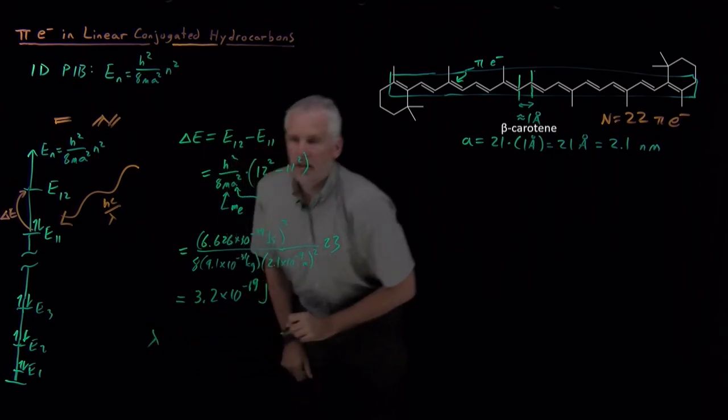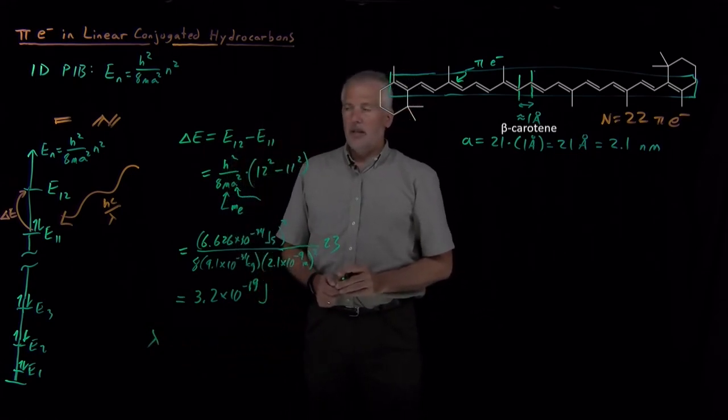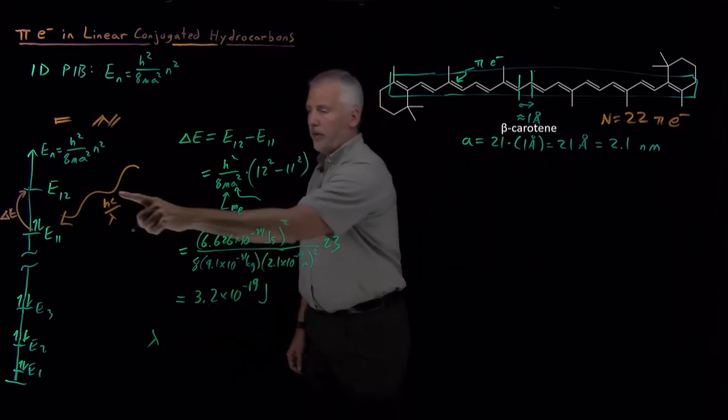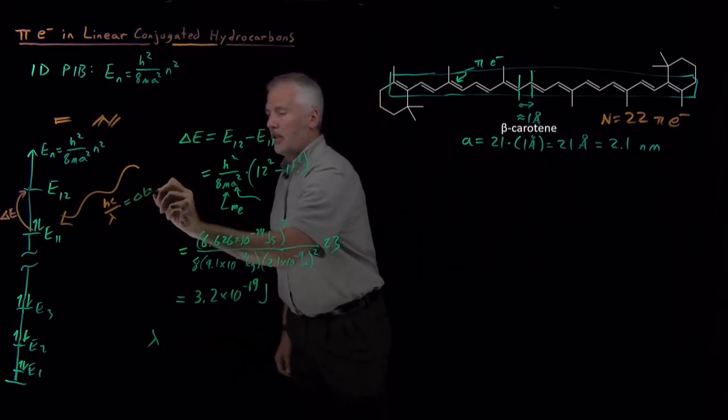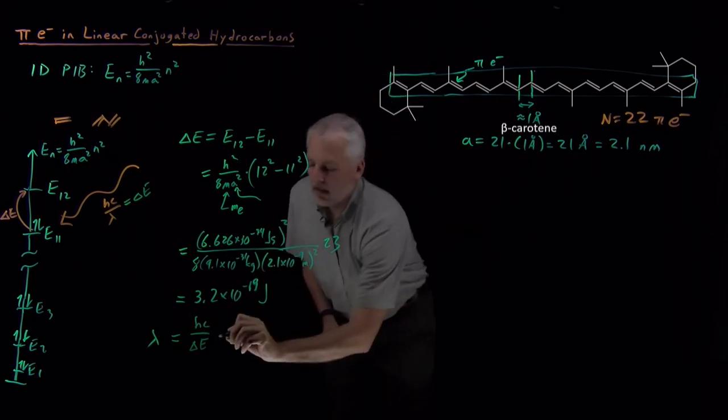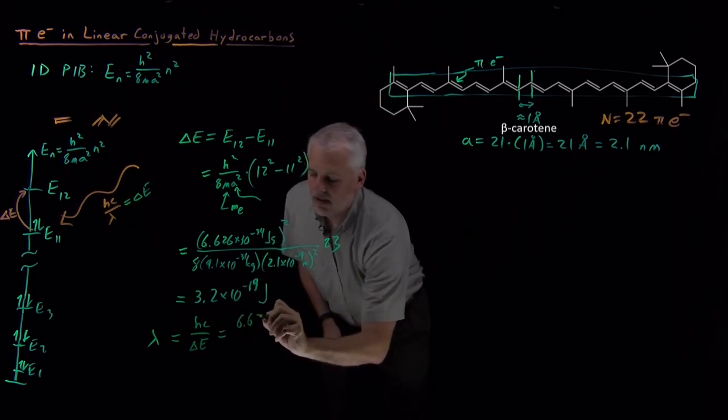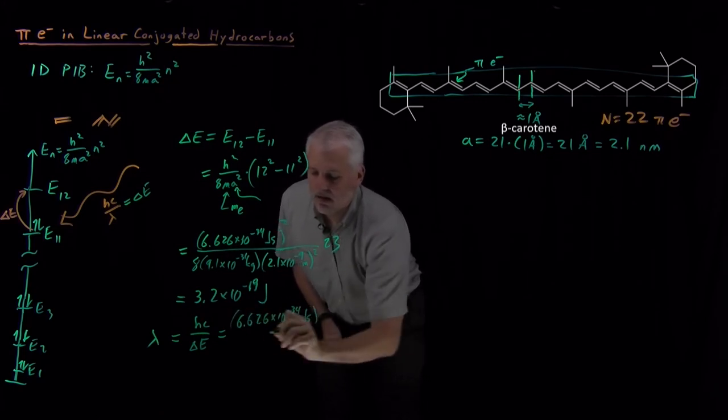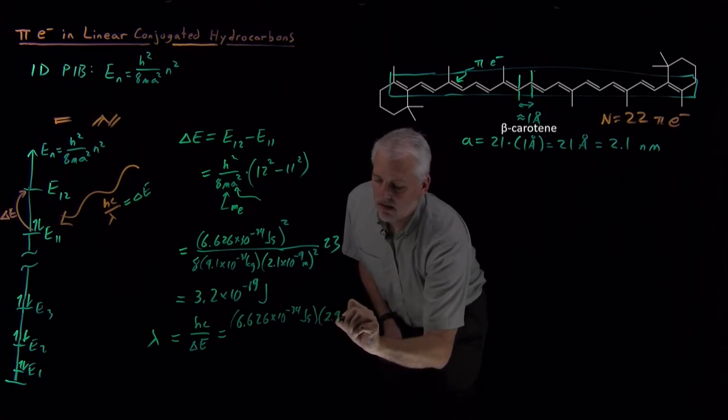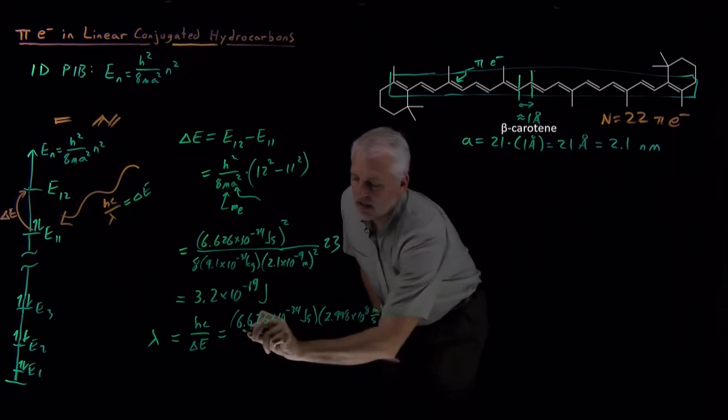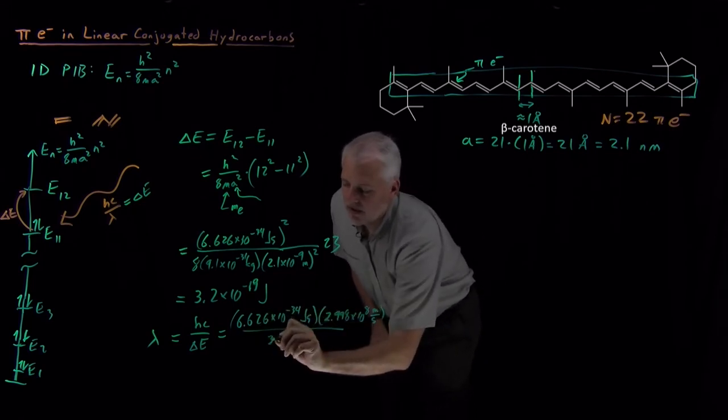I get 3.2 times 10 to the minus 19th joules is the difference in energy between these two energy levels in particular. So I'm less interested in the energy of that gap or the energy of the photon than I am in the wavelength of the photon. So if I rearrange that equation to solve for the wavelength of the photon, again, using Planck's constant. The speed of light, 3 times 10 to the eighth meters per second. Divide that by the energy that I've just obtained.